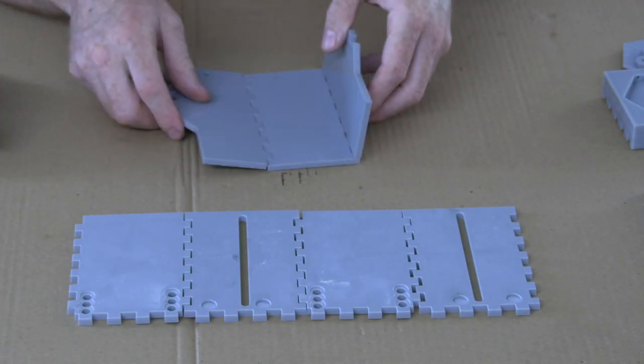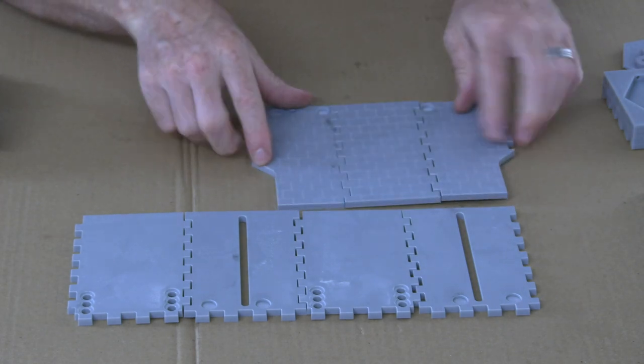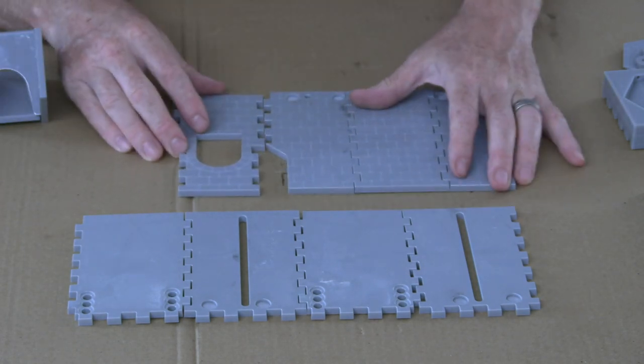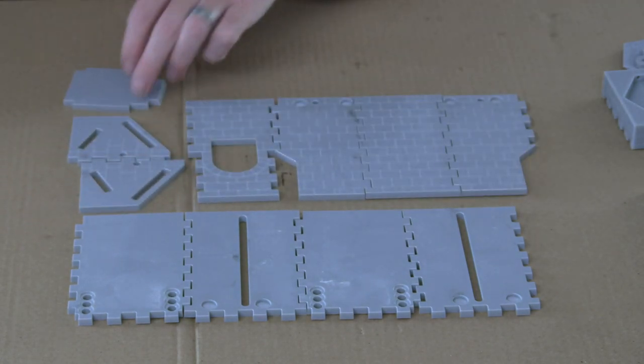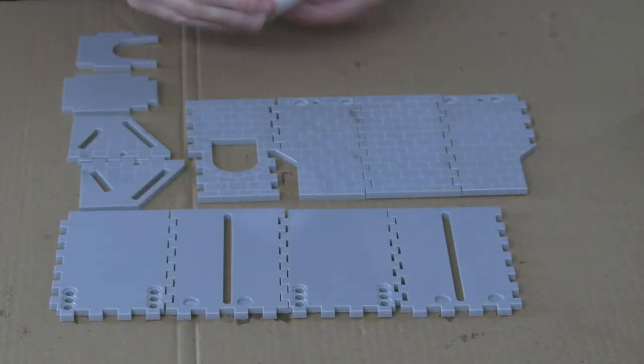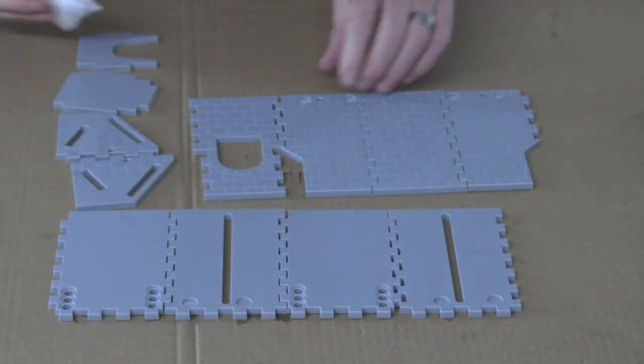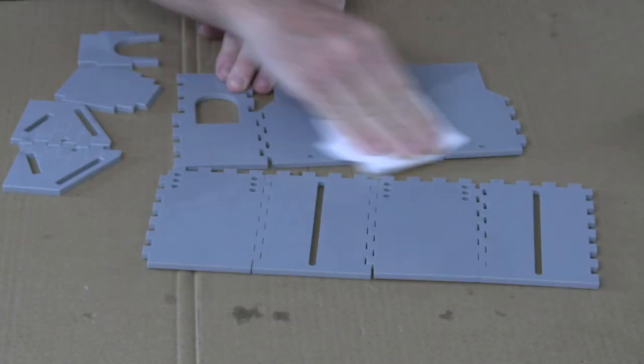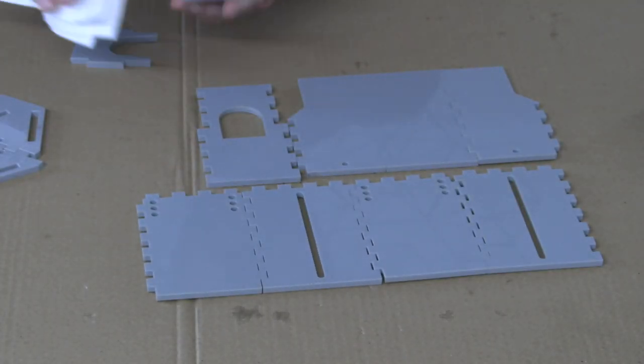The first thing we're going to do is clean up all these pieces of plastic. It helps to keep them partially assembled because that's going to make it a little easier to clean between all the cracks. Now just get a paper towel or rag and wet it down with some isopropyl alcohol, and we're going to use that to wipe off all of the soot and burn marks and smoke that was left over from the laser cutter.